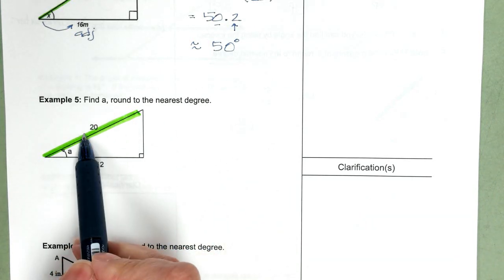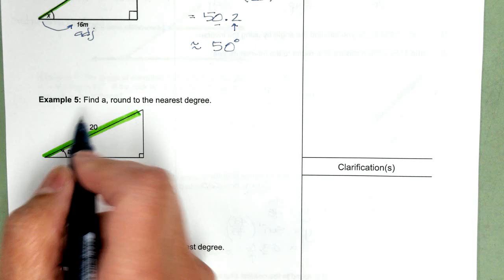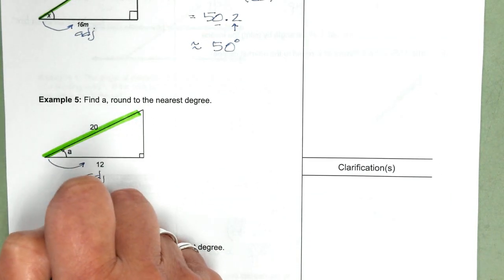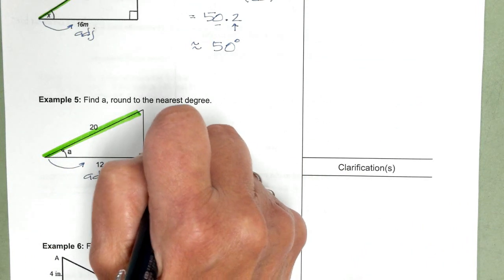Example five. Again, we're given the hypotenuse. And this is the adjacent side. So once again, we're going to use cosine.